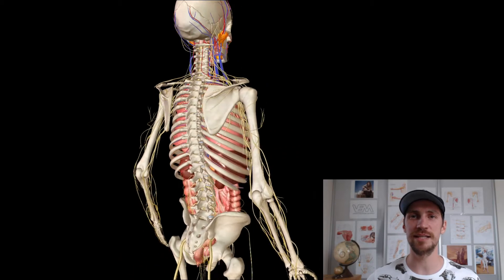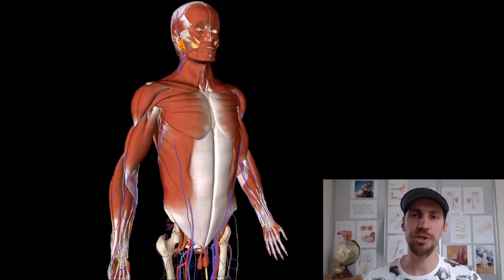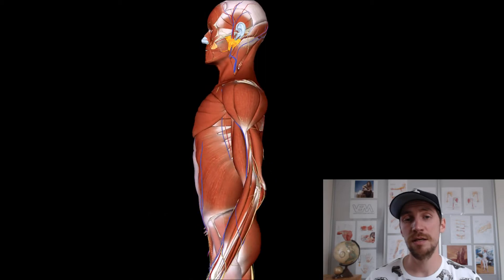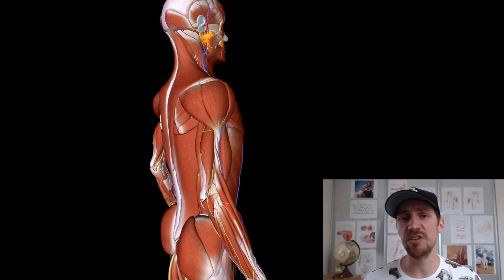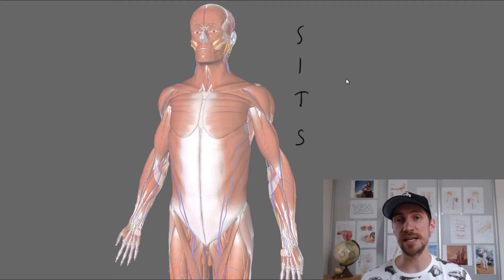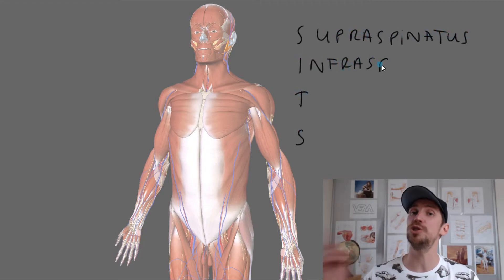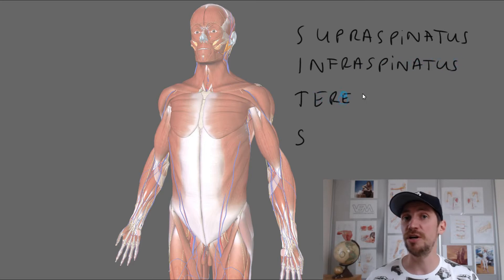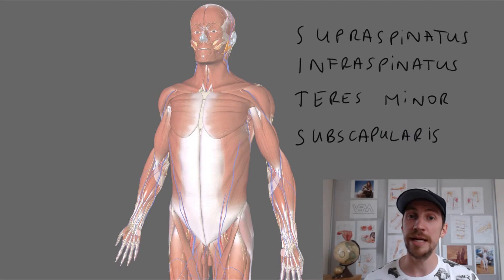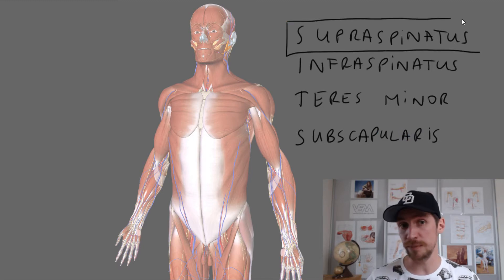Hello everyone, my name is Dionys and this is VEMonline.net. In this short video we'll keep expanding on shoulder stability. In my last videos we started to talk about so-called SITS muscles — S-I-T-S — which are basically the first letters of muscles that surround the shoulder joint. They are very essential for shoulder stability. Today we'll take a look at them individually and we will start with supraspinatus.